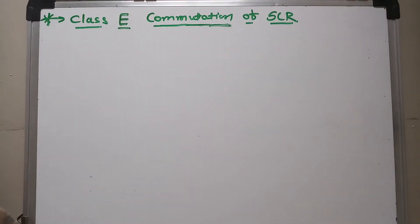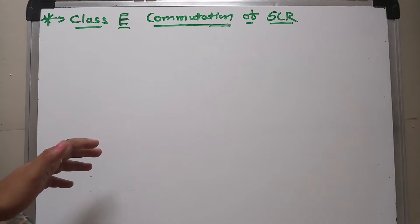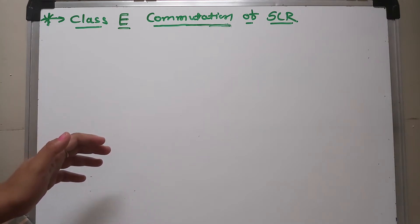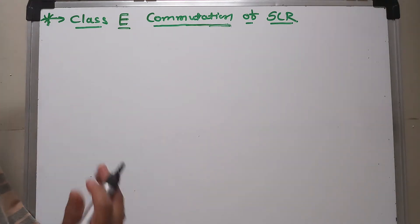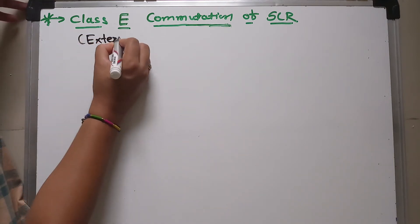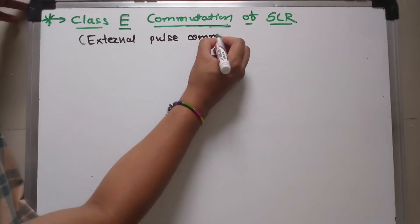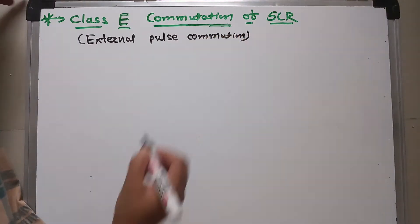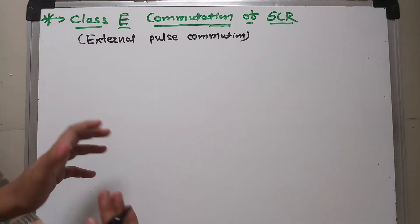Hello dear friends, myself is Roshni Parikh and today's topic of discussion is Class E commutation of an SCR, which also belongs to force commutation. In force commutation, the SCR is forced to turn off by using an external commutation circuit. Class E commutation is also known as external pulse commutation, meaning we use a pulse generated by an external source to turn off the main or working thyristor.